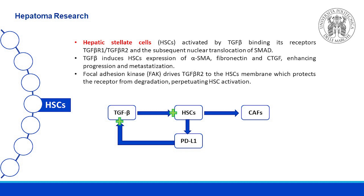Hepatic stellate cells are a resident population of liver tissue. They can be activated by TGF-beta binding its receptors TGF-beta-R1 and R2, which leads to the subsequent nuclear translocation of SMAD. TGF-beta induces hepatic stellate cells expression of alpha-SMA, fibronectin, and CTGF, enhancing progression and metastatization. Moreover, PD-L1 produced by hepatic stellate cells stabilizes TGF-beta receptor 2 and TGF-beta receptor 1, supporting TGF-beta-stimulated activation of hepatic stellate cells into myofibroblasts and halts the lysosomal degradation of TGF-beta-R2 protein.